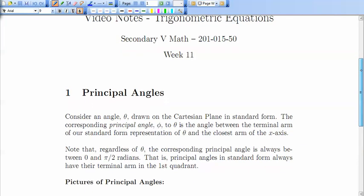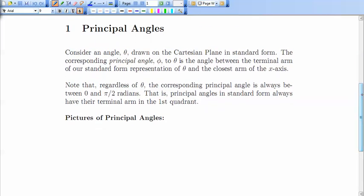The first idea I want to talk about is the idea of principal angles. Now for every single angle that we can possibly draw on the Cartesian plane, all those angles whose values are real numbers, positive and negative, big and small, every single one of them has a principal angle. And the good news about this principal angle is that it's an angle between zero and pi by two.